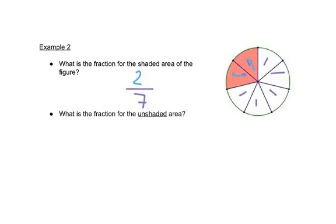Then it asks: what is the fraction of the unshaded area? There are still 7 pieces in our circle, so the bottom number is still 7. For unshaded we have 5 pieces, so the top number is 5, giving us 5 sevenths.